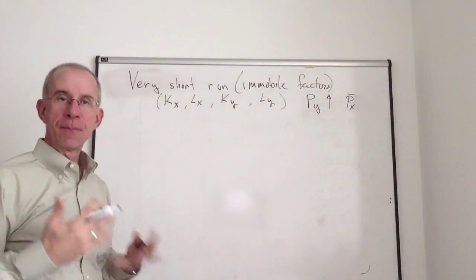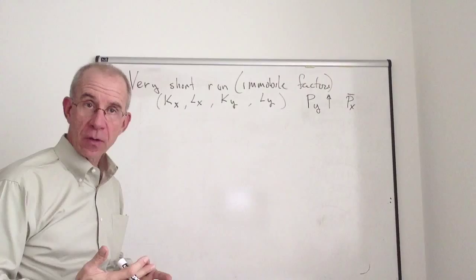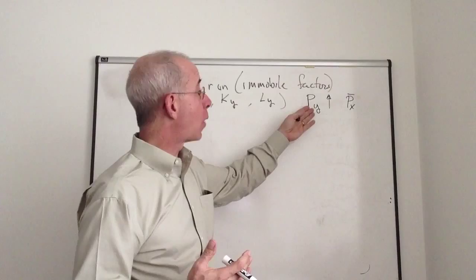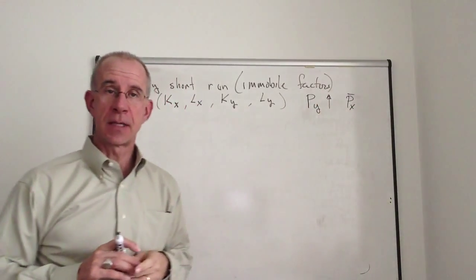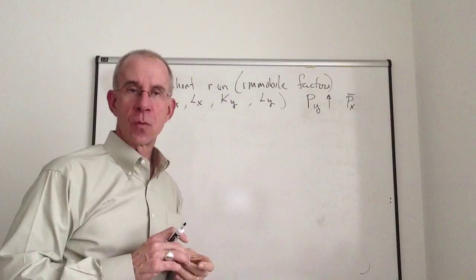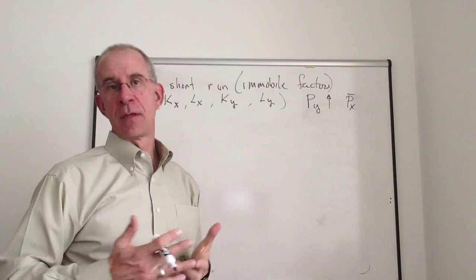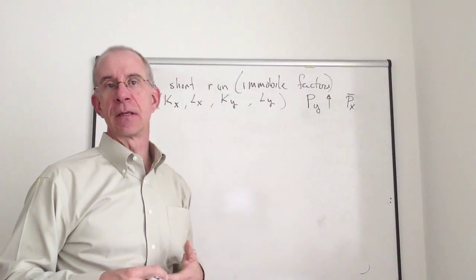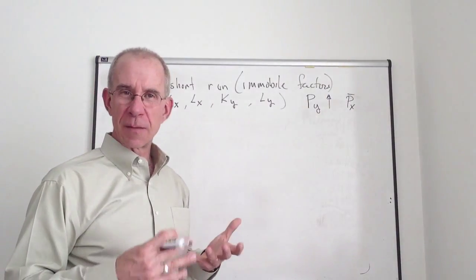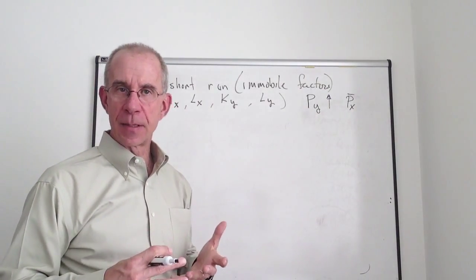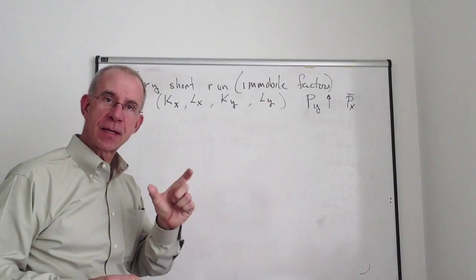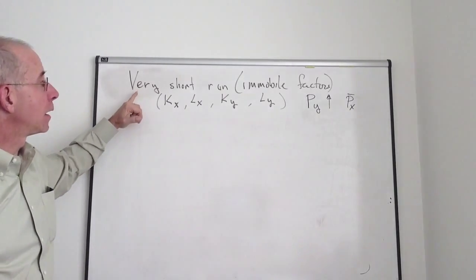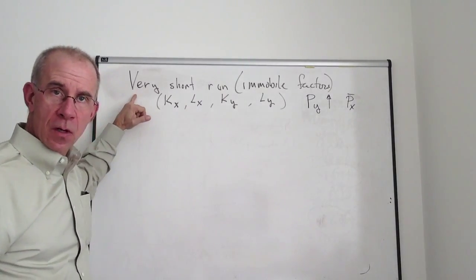I want to analyze the impact on the real returns to factors when the price of Y goes up and the price of X stays the same. The real returns refer to the ability of different members of society to buy products — it's the standard of living, a measure of economic circumstances based on how much they can buy with what they earn. We're going to do this in the so-called very short run.